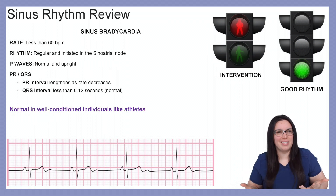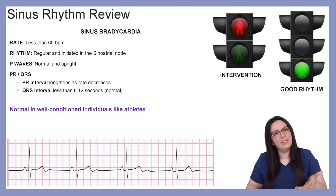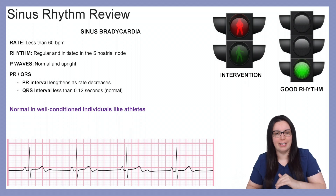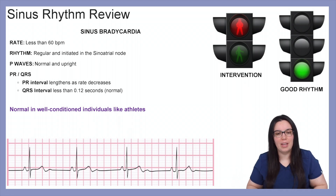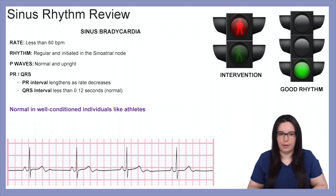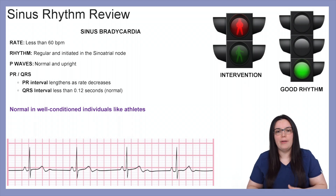Let's talk about sinus bradycardia. The rate of sinus bradycardia is less than 60 beats per minute — bradycardia, less than 60. The rhythm is regular and is initiated by our sinoatrial node, and P waves are normal and upright.